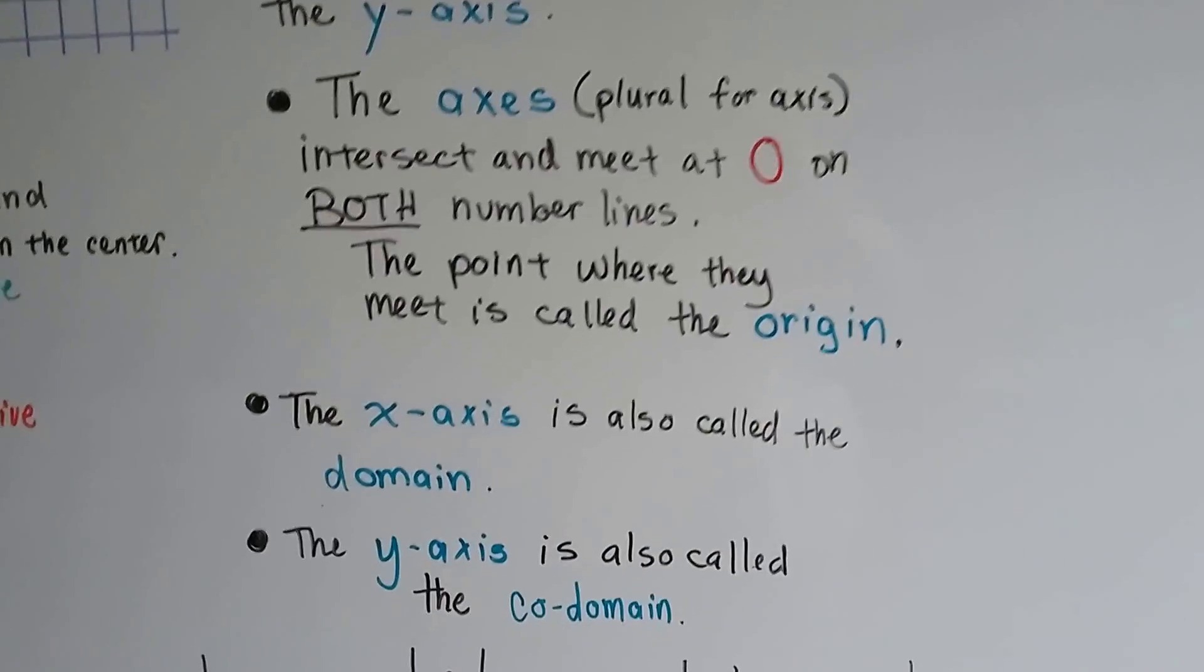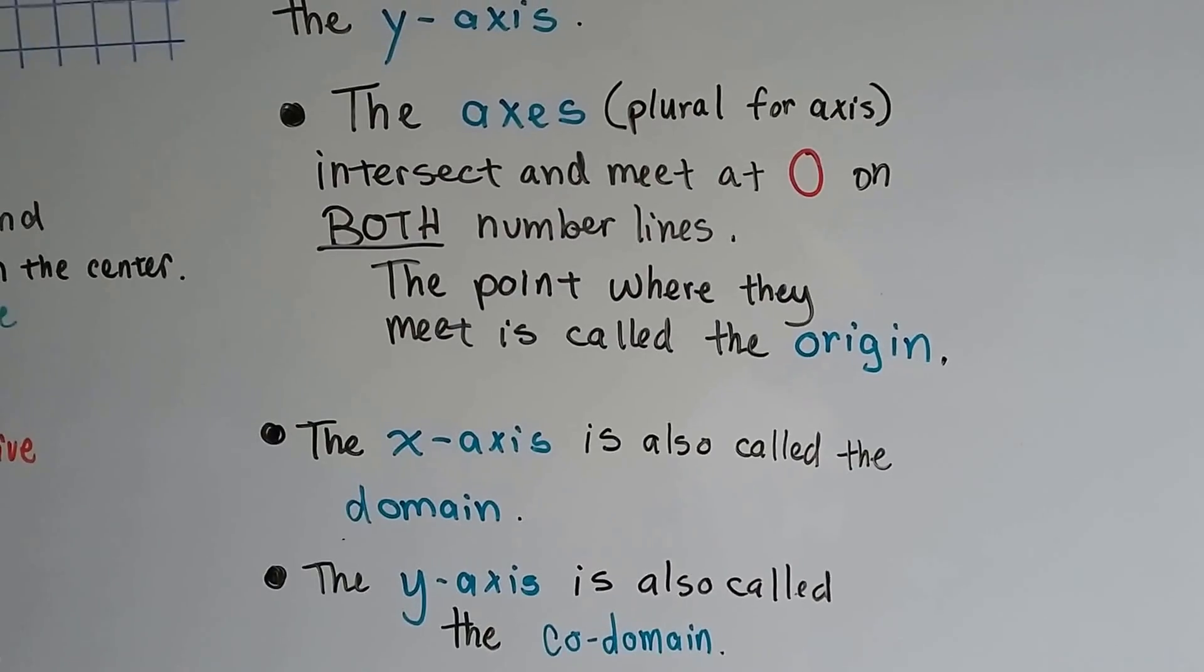The x-axis is also called the domain, and the y-axis is also called the co-domain.